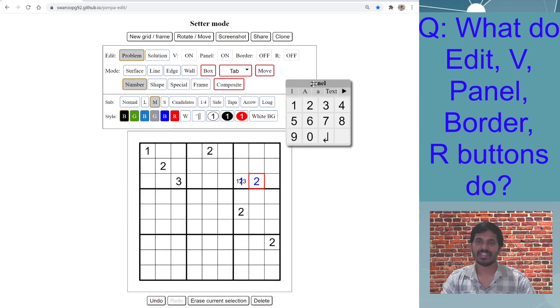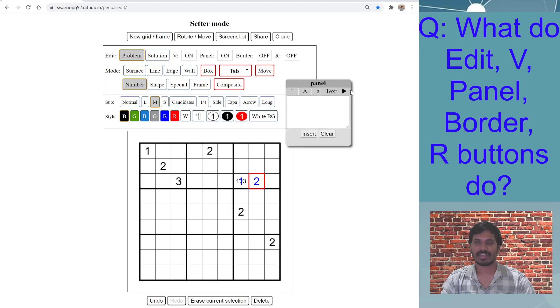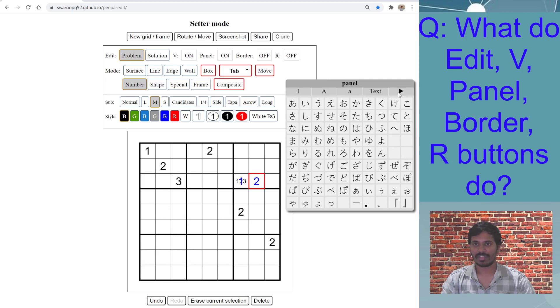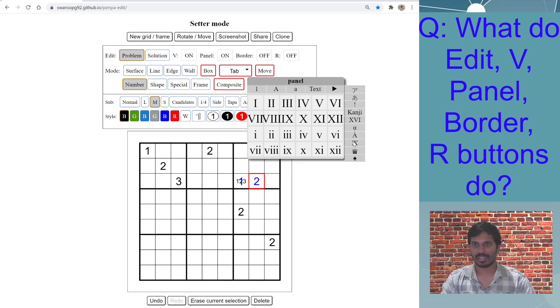First of all, you can move this panel anywhere you want based on your comfort, and then you can see it has a variety of options. You can enter numbers, text, capital letters, small letters. I'll talk about this text more later, but then it also has this triangular arrow. If you click, it provides you different more options, the different language characters.